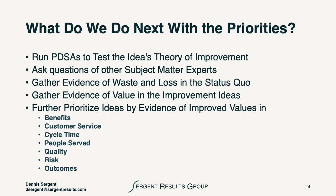So what do we do next with the priorities? We run PDSAs to test the idea's theory of improvement. We ask questions of other subject matter experts, gather evidence of the waste and loss in the status quo, and gather evidence of the value in the improvement ideas. We further prioritize the ideas by the evidence of improved values in one of these measurable areas.